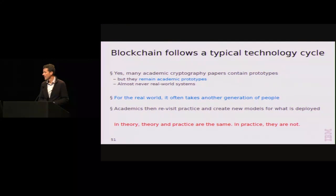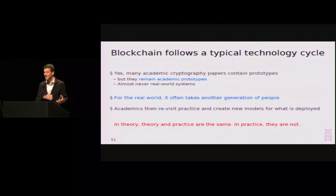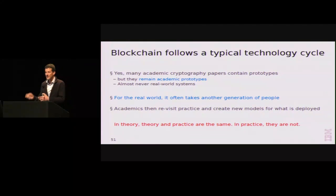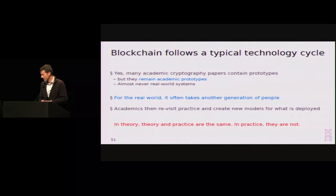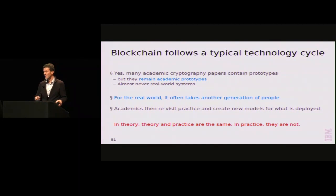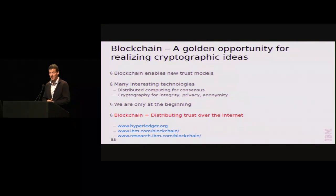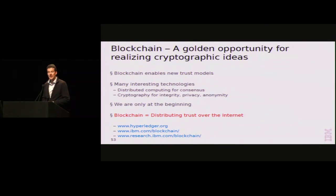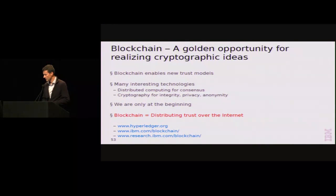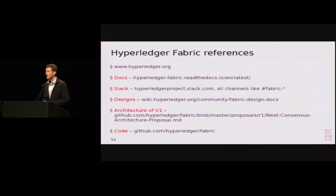We've seen some of that at this conference as well. There is a business case. Academics nowadays are studying choices made by TLS and imposed by specific practical constraints. Ideally this process is reciprocal. And the famous quote: in theory, theory and practice are the same — in practice, they are not. To summarize: blockchain is a golden opportunity for cryptographers working on interesting practical deployments. We are engaging in new trust models. The one-line summary of what blockchain is: distributing trust on the internet. I have a collection of links here that should get you started on the Hyperledger Fabric as well. Thank you.